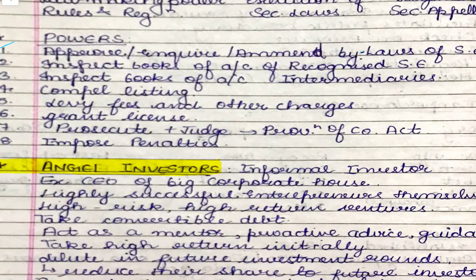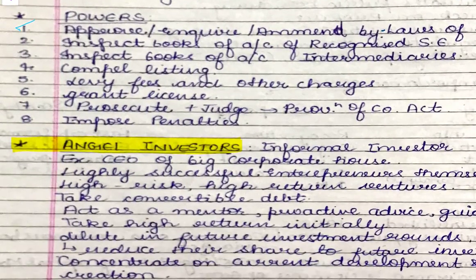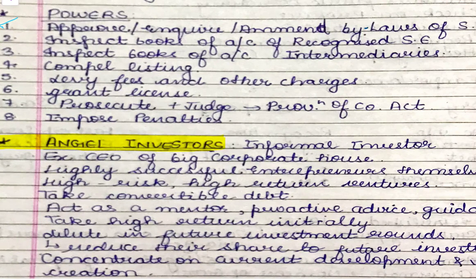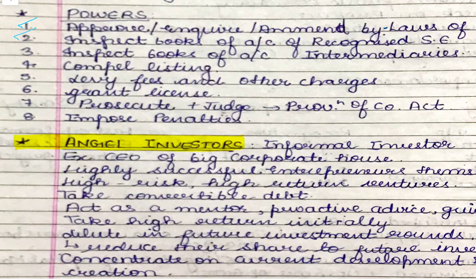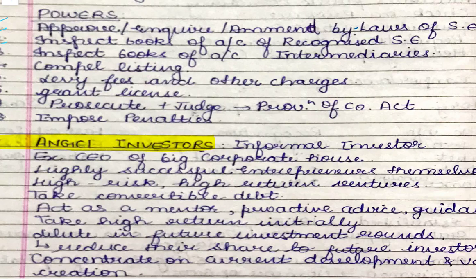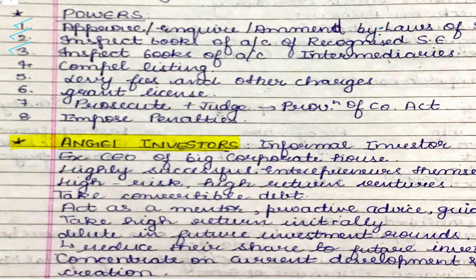The second power of SEBI is that it can inspect the books of accounts of recognized stock exchanges — whatever stock exchanges are recognized by SEBI, SEBI can inspect their books of accounts. Books of accounts of intermediaries can also be inspected — brokers who execute share trades. Every trade is executed through a broker, and brokers' commission is also fixed. So SEBI can inspect brokers' books of accounts as well.